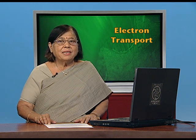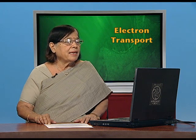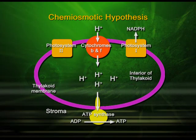This membrane is important and many things are happening inside and outside it. You can see photosystem 2 here, photosystem 1, and in between the cytochrome. You can also see the electrons and H+ ions moving from photosystem 2 to photosystem 1, as shown in this diagram. Finally, ATP synthetase is helping ADP to be converted to ATP. Naturally, the electrons are used and they are produced again by splitting of water.